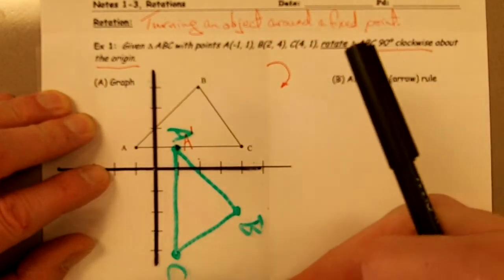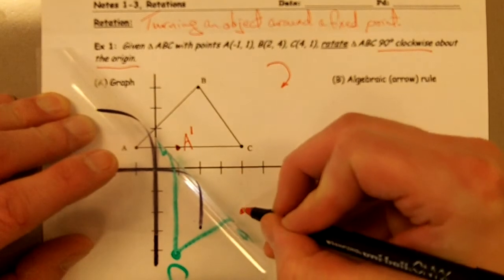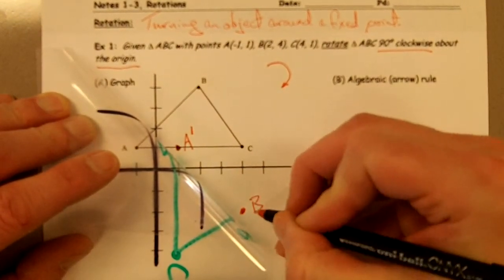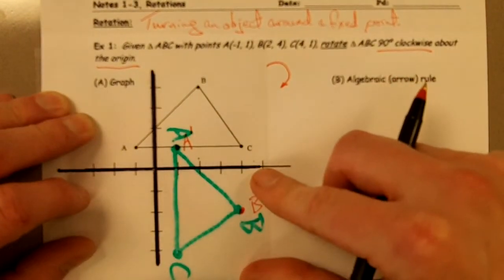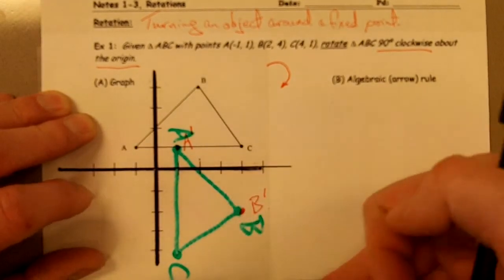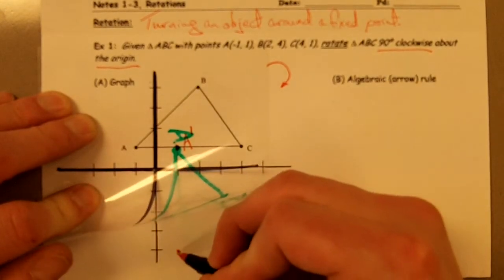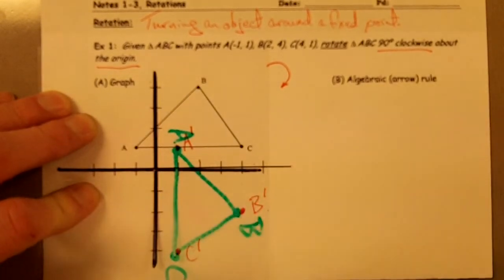I'm going to call that A prime because that's my rotated point A. My point B is going to be right here. So there's B prime. And then my point C is going to be right down here. And so here's point C prime.